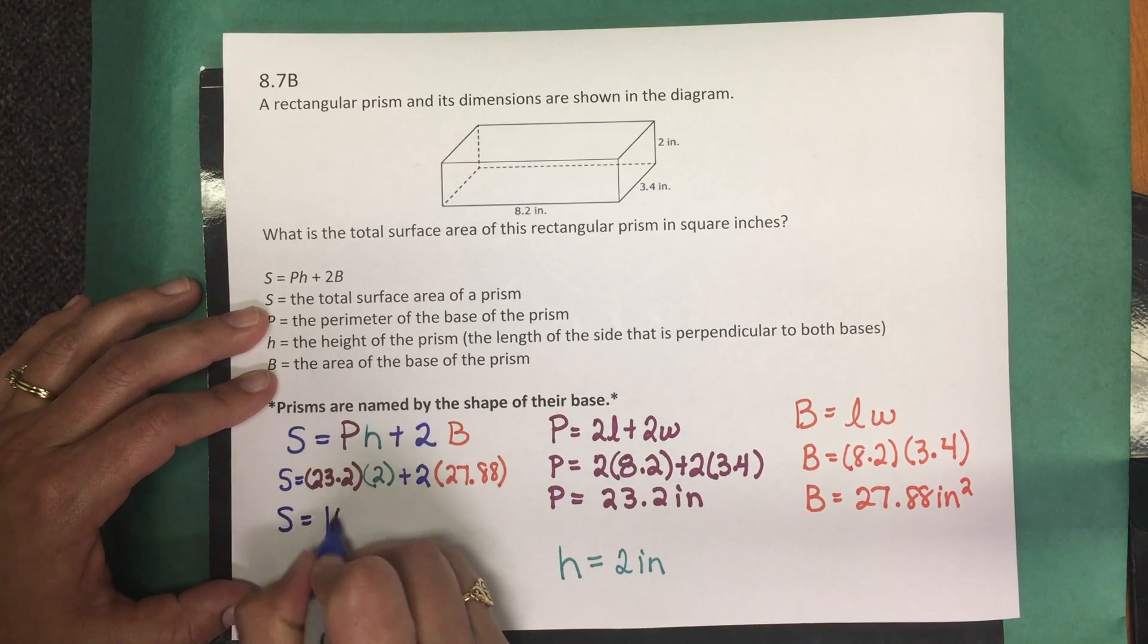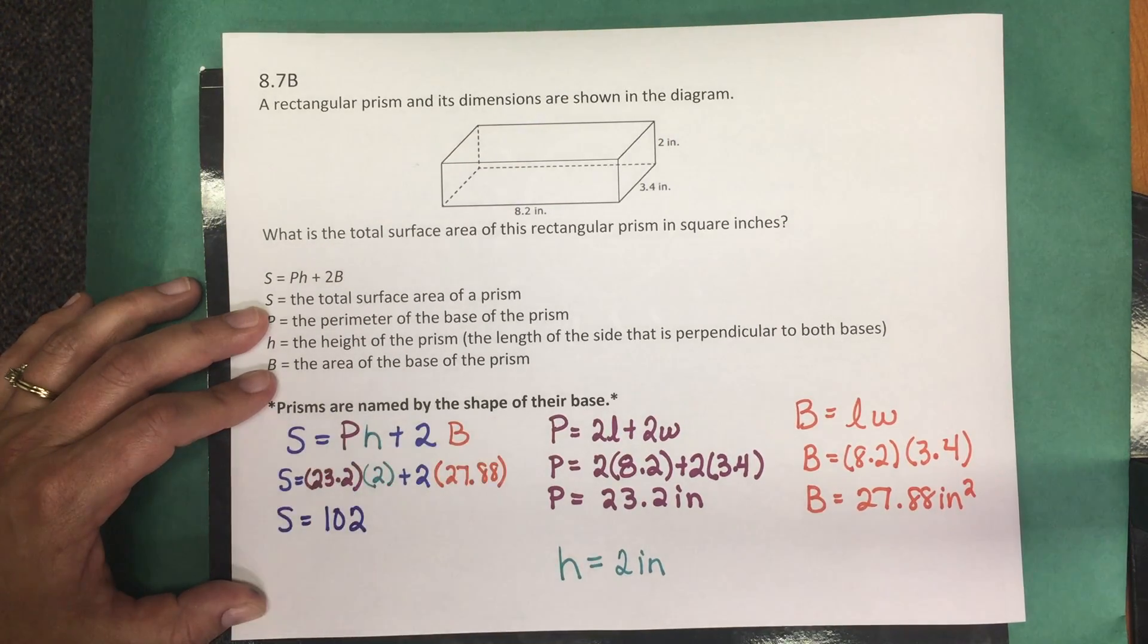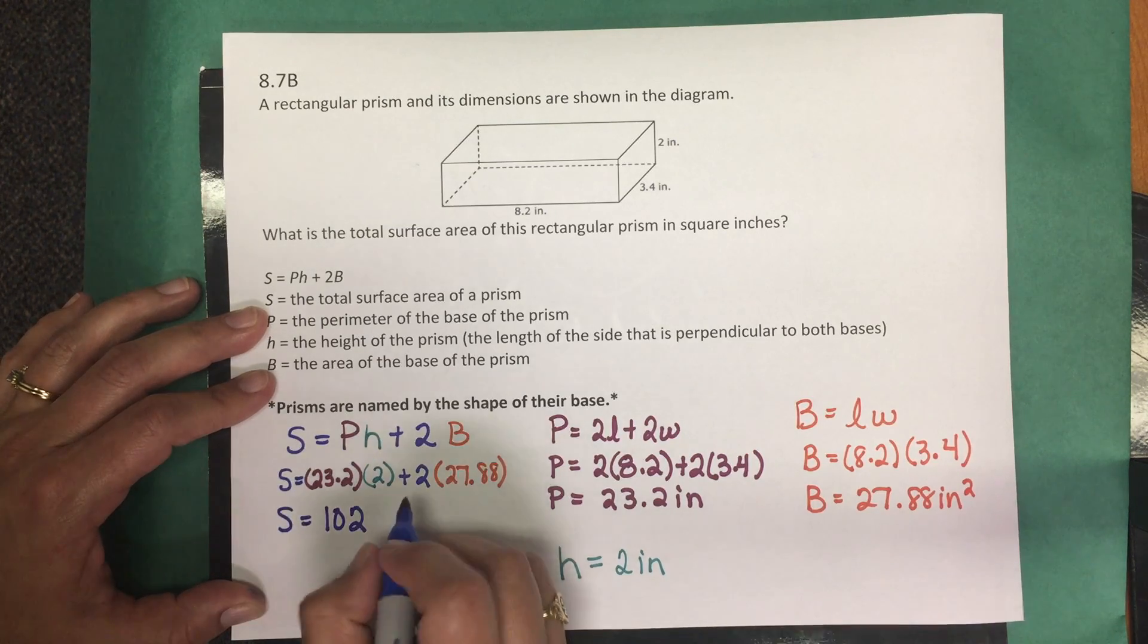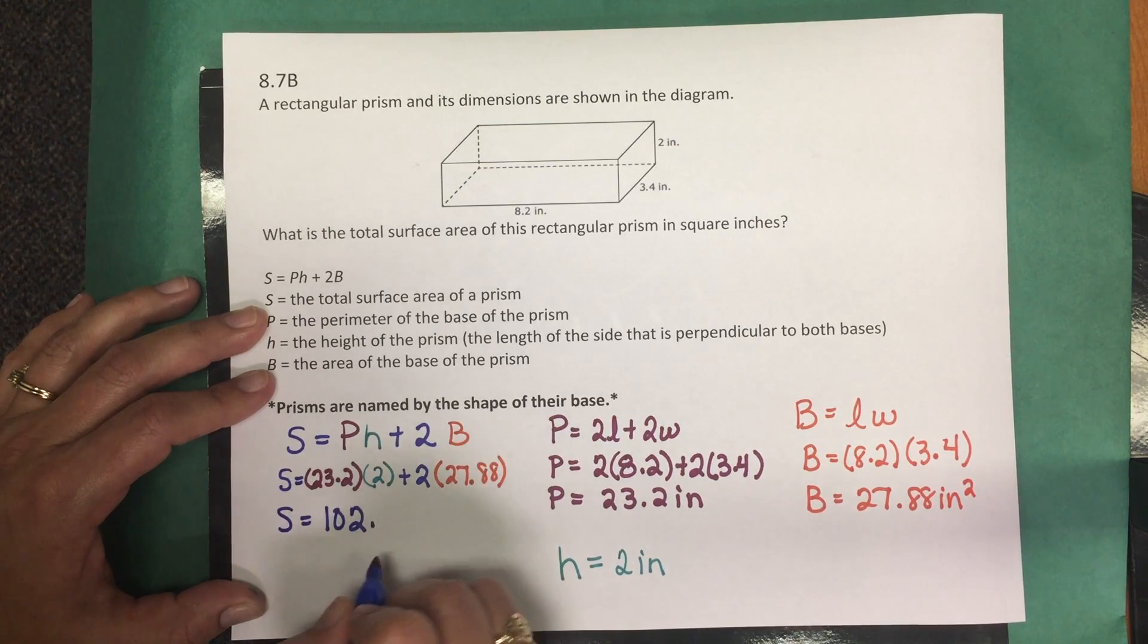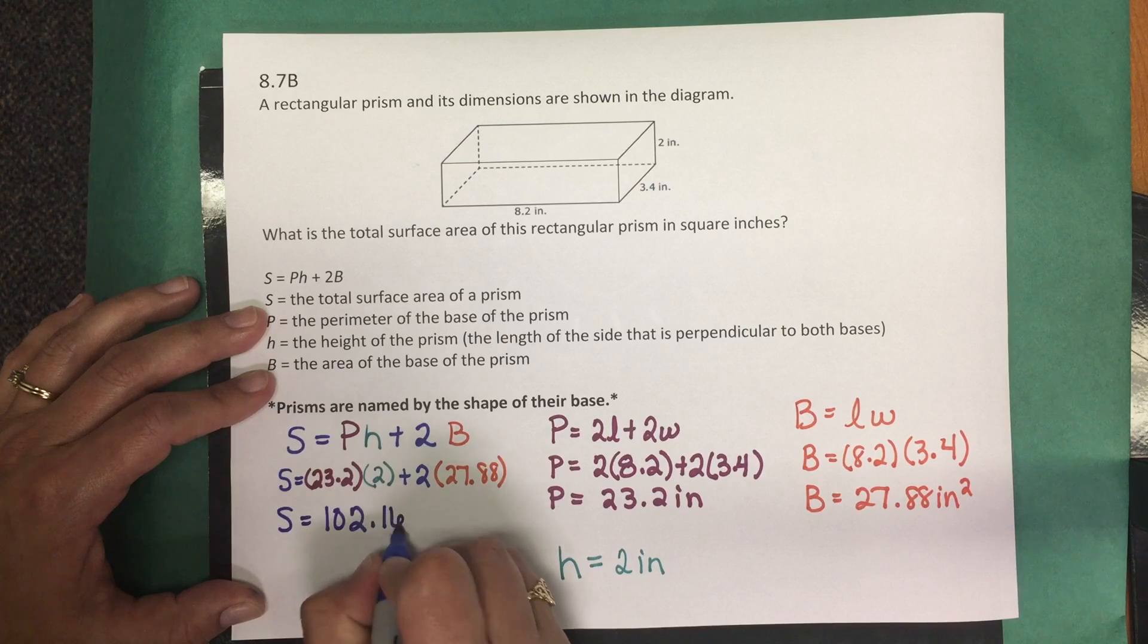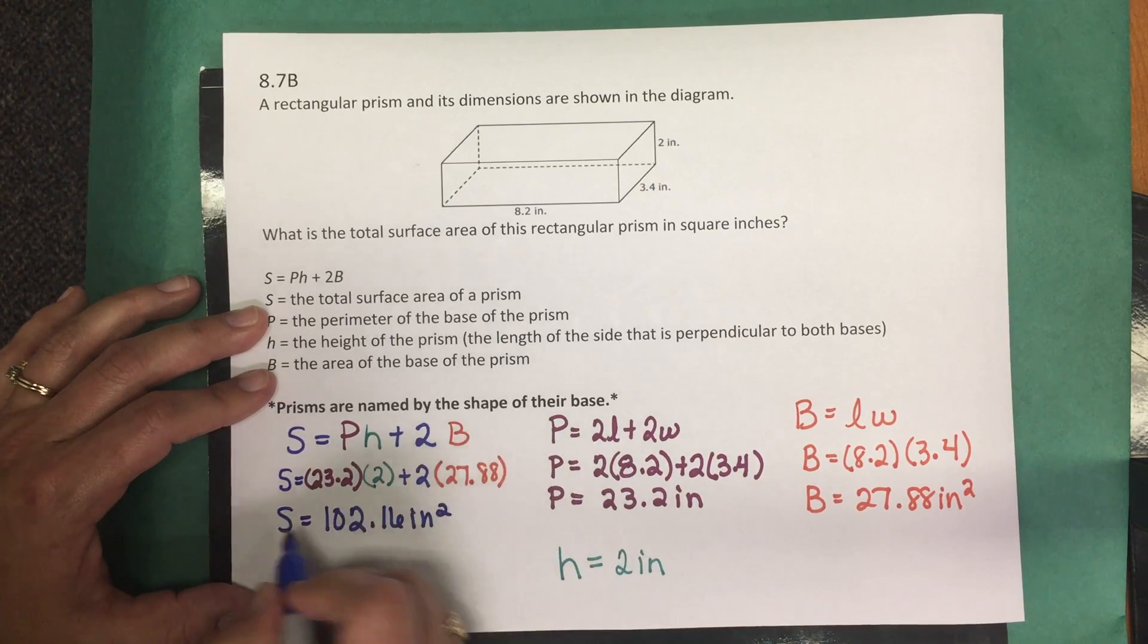We get that the value for the total surface area of this rectangular prism is 102.16 inches squared.